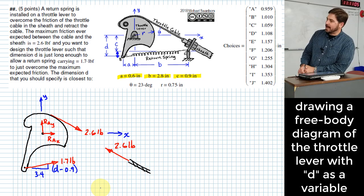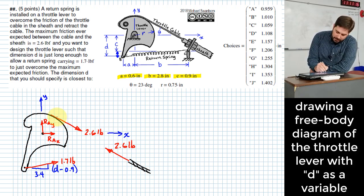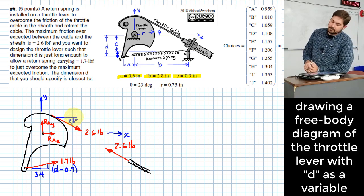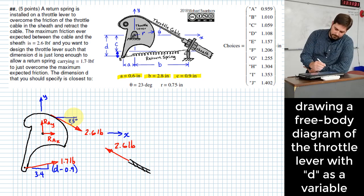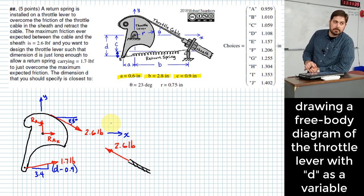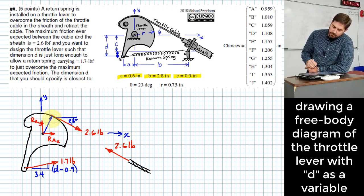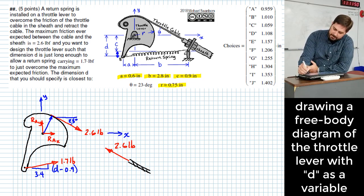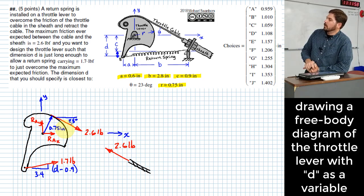Okay. So if we're taking moments around point A, then what other information would be helpful on this diagram? Okay. We could put the angle of the throttle cable on here if we want. 23 degrees. Okay. Anything else? What about the radius of this curved surface that the throttle cable is attached to? Would that be helpful? Okay. What is that value? Okay. We've got this 0.75 value right here. So three quarters of an inch.